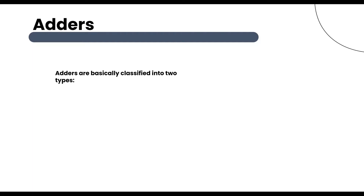Now I am talking about adders. An adder is a digital logic circuit in electronics that is widely used to add numbers. Adders are basically classified into two types: half adder and full adder.